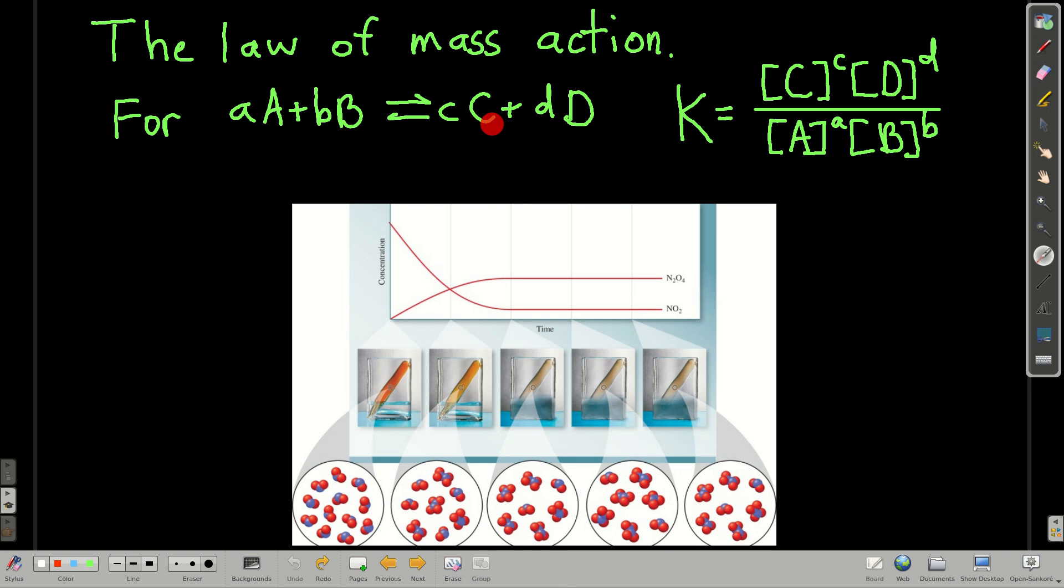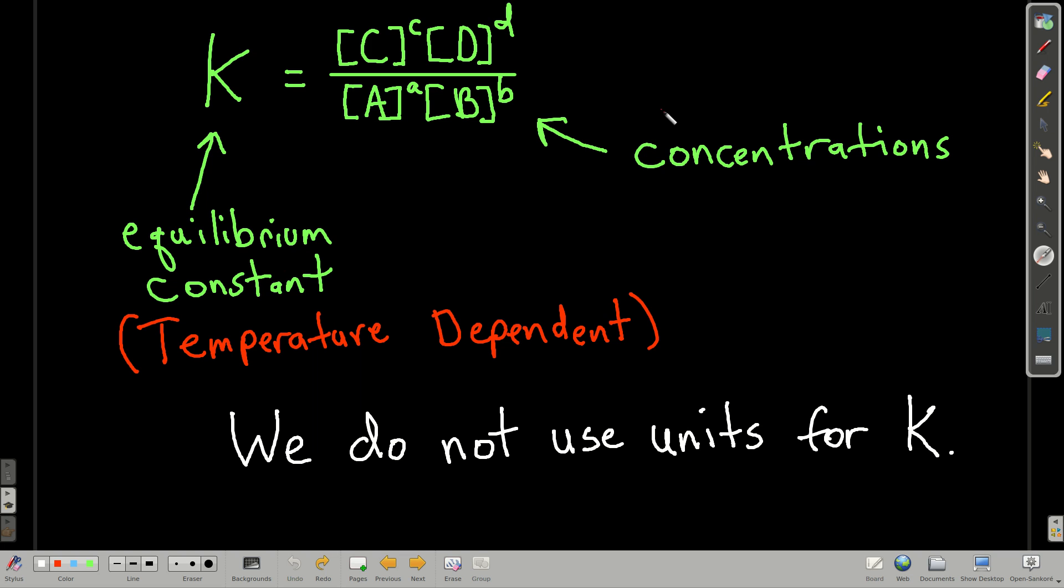The law of mass action says that for any equilibrium reaction, which we're going to write our generic equilibrium reaction as aA + bB in equilibrium with cC + dD. In this notation, the lowercase letters are the coefficients in the balanced equation, the stoichiometric coefficients. And the capital letters represent the formulas for the reactants and the products. The law of mass action says that if we take the ratio of the concentration of the products each raised to the power of their coefficient, [C]^c times [D]^d divided by the concentrations of the reactants raised to the powers of their coefficients, [A]^a times [B]^b, it's equal to some constant, K, which we call the equilibrium constant.